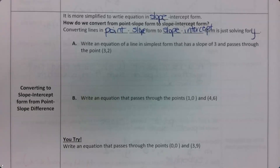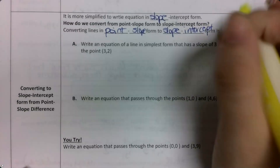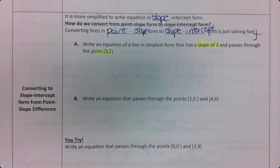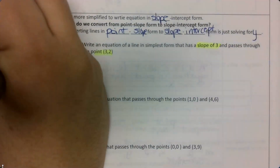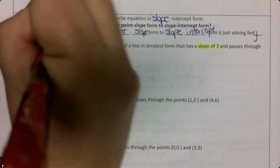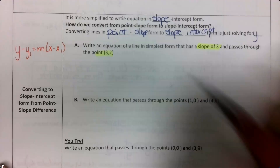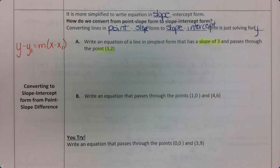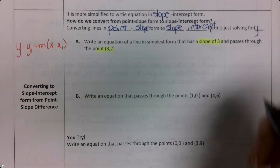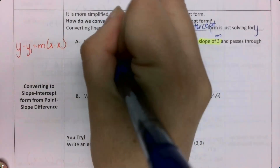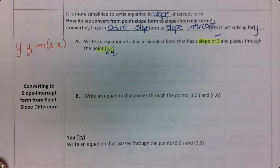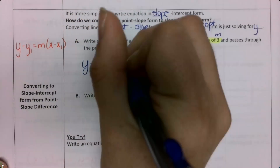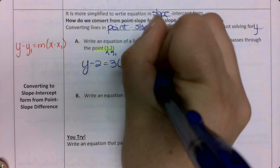This one wants me to write the equation of a line that has a slope of 3 that passes through the point (3, 2). So I'm plugging into my point-slope form. Replacing those values: y minus 2 equals 3 times x minus 3.